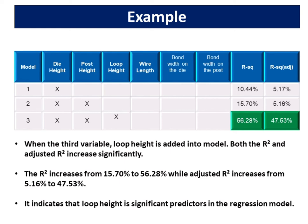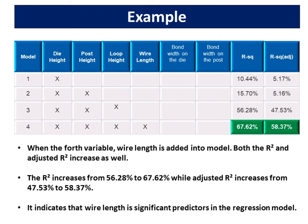The R-squared increases from 15.70% to 56.28%, while adjusted R-squared increases from 5.16% to 47.53%. It indicates that loop height is a significant predictor in the regression model. When the fourth variable, wire length, is added into the model, both the R-squared and adjusted R-squared increase as well. The R-squared increases from 56.28% to 67.62% while adjusted R-squared increases from 47.53% to 58.37%. It indicates that wire length is a significant predictor in the regression model.